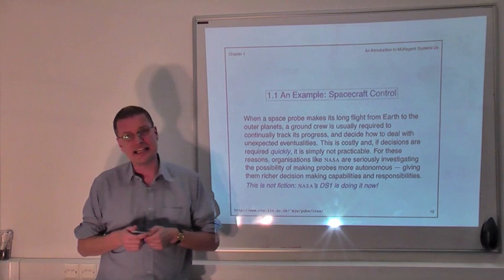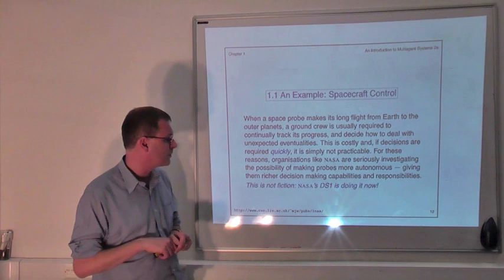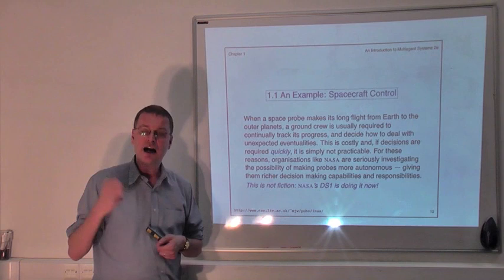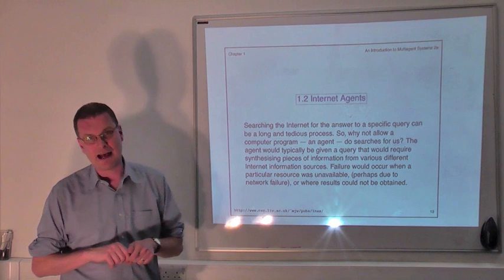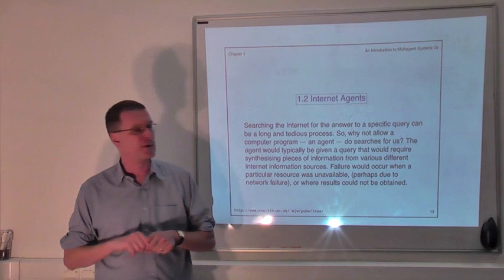So to test out these ideas, NASA deployed a space probe in, I believe, 1998. The space probe was called DS1, where they used a software architecture for decision making, which is very closely related to some of those that we're going to study in these films and in the textbook. Well, most of us don't write software for NASA, so that's perhaps a little bit of an extreme example. So let's have a look at a slightly more everyday example.